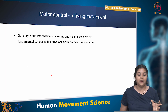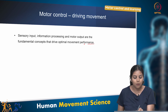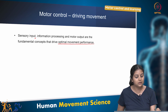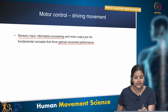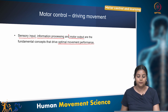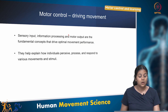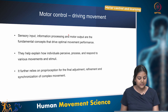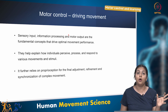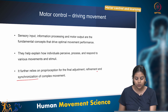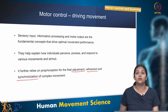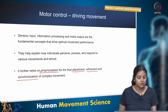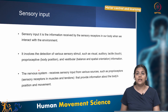Sensory input, information processing and motor output are the fundamental concepts that drive optimal movement performance. They help explain how individuals perceive, process and respond to various movements and external stimuli. These concepts also rely on proprioception for the final adjustment and refinement of complex movements.